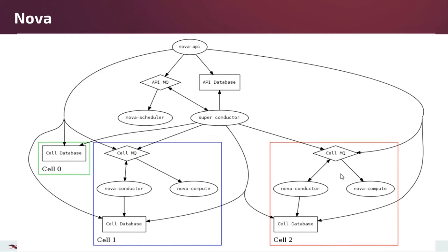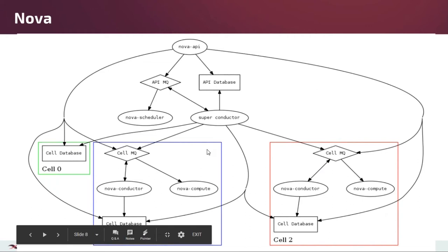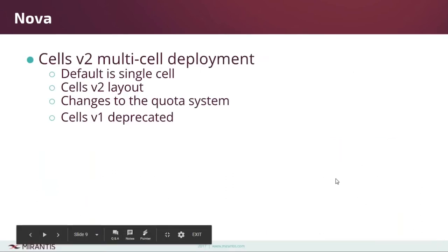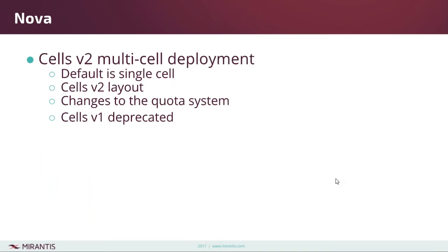It's important to note that the services in these cell boxes cannot communicate directly with the API via RPC, so make sure you take that into consideration when architecting your system. The quota information has moved to the API database, decoupling the cells from the API as much as possible. Cells v1 has been deprecated and you can expect it to go away within the next couple of releases.